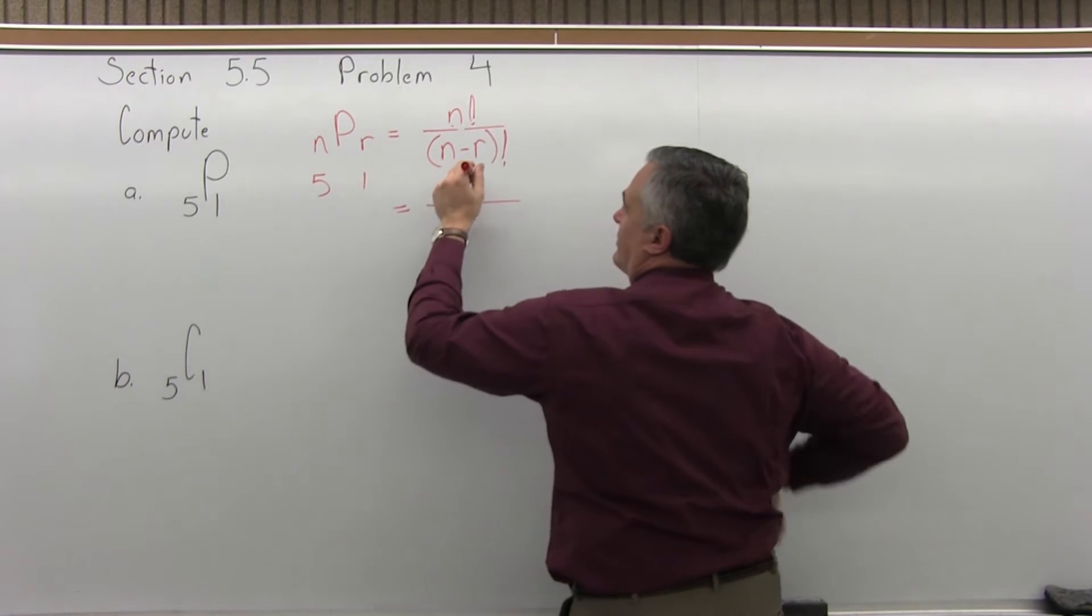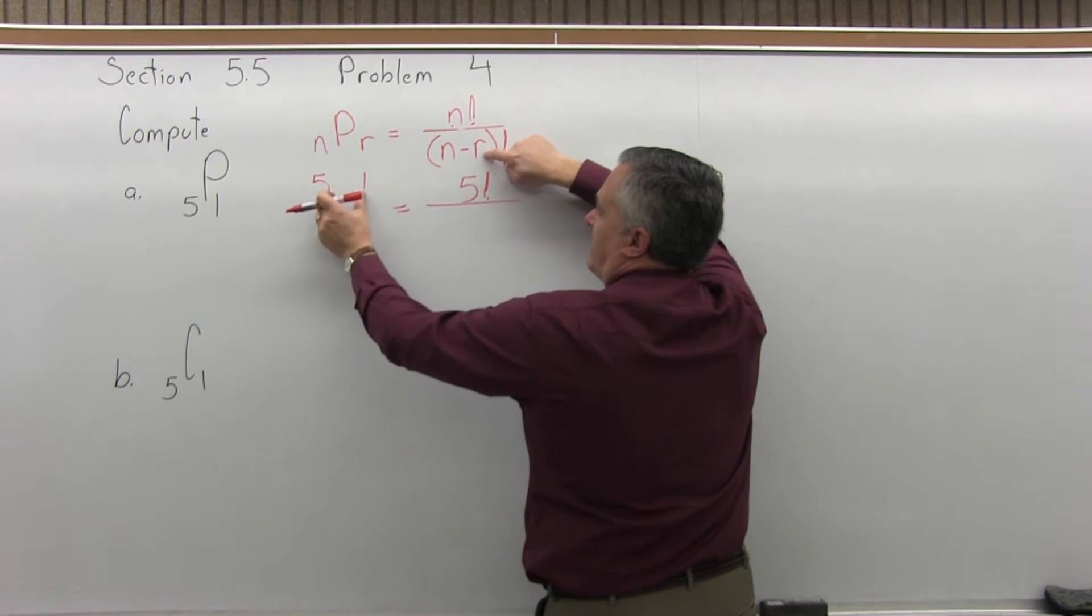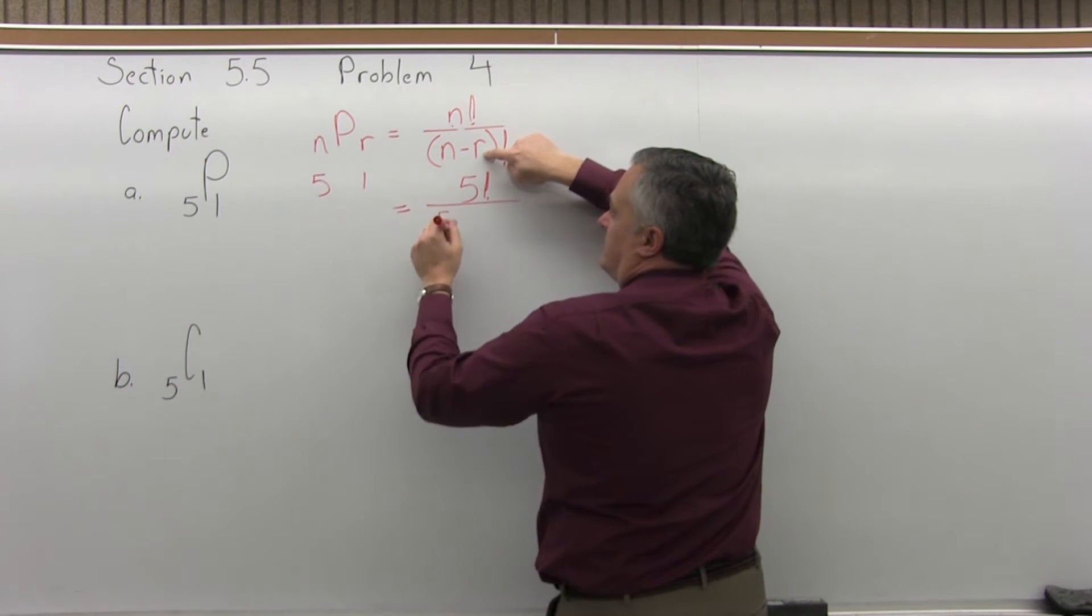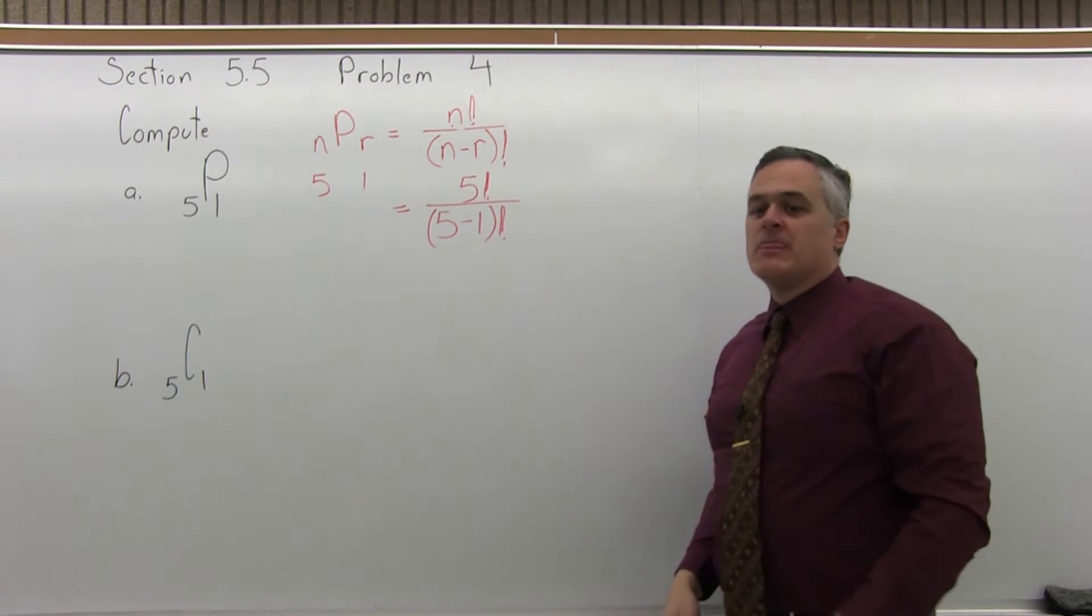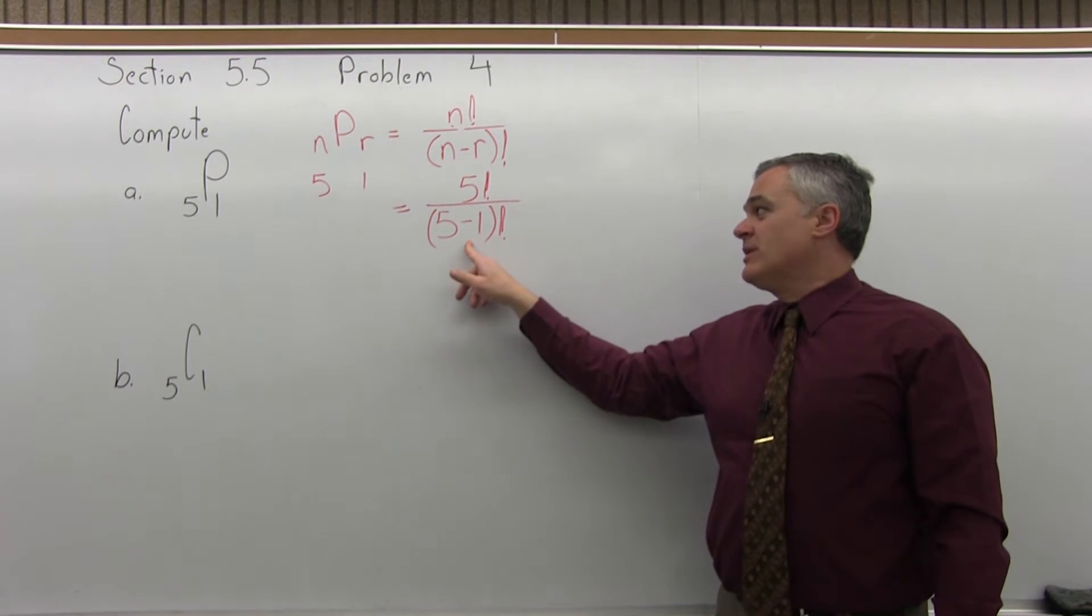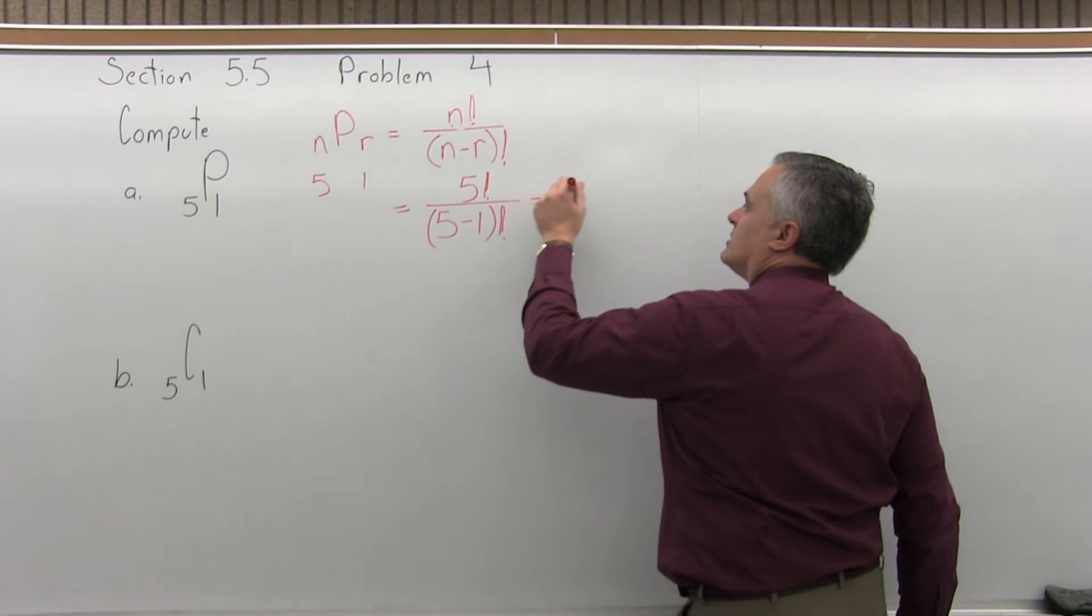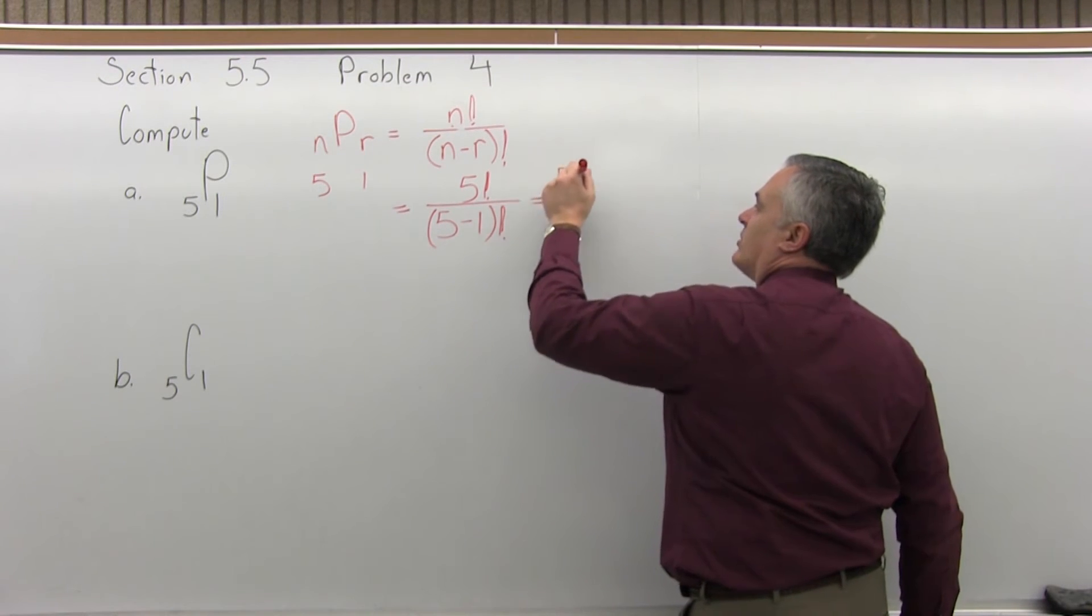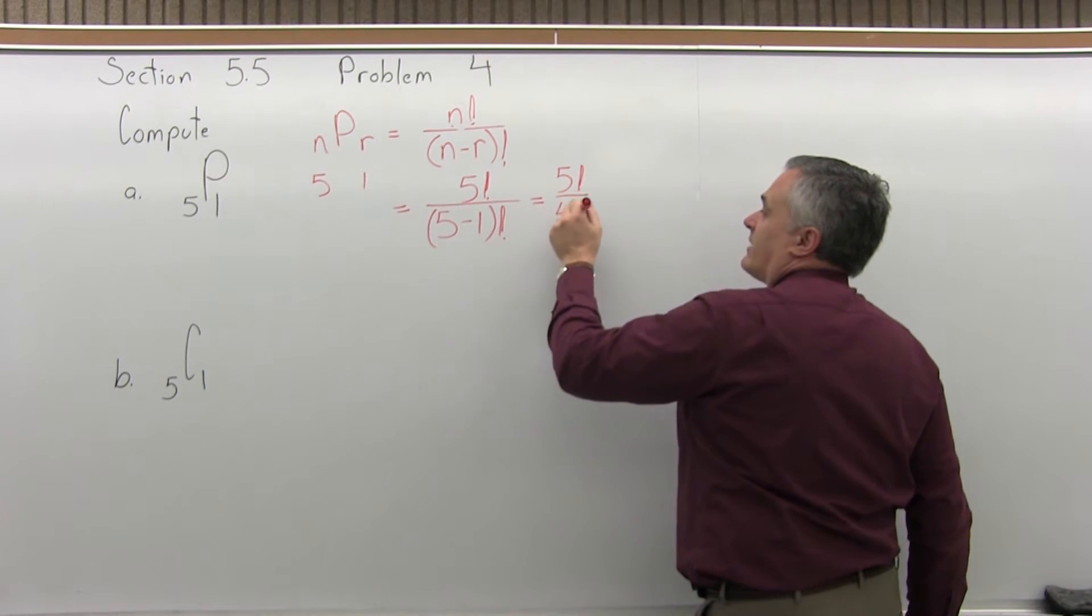n factorial will be 5 factorial. Then in my parentheses, n minus r will be 5 minus 1, in parentheses, factorial. So as with any type of math, when you have parentheses, you must do your work in parentheses first. So I'll leave the 5 factorial on top just for a sec, and underneath 5 minus 1 will be 4 factorial.